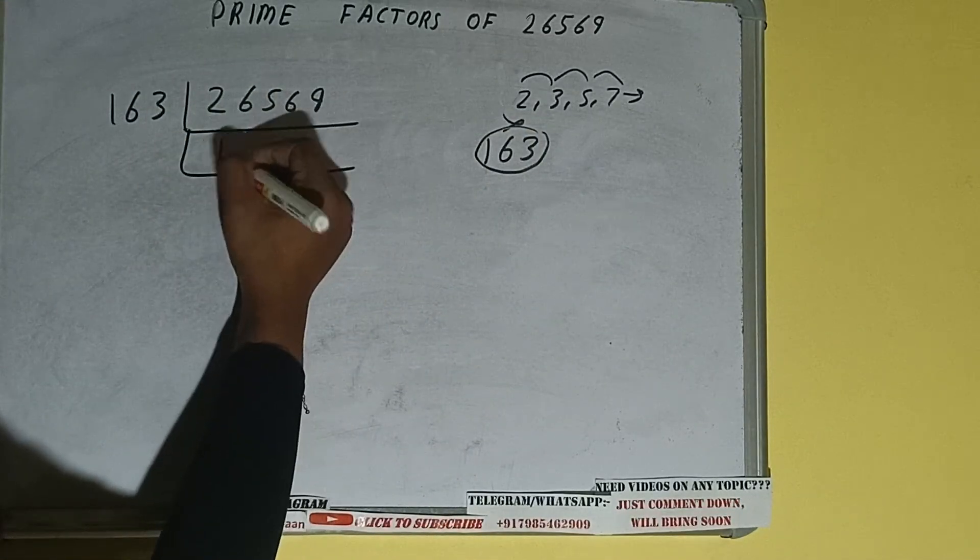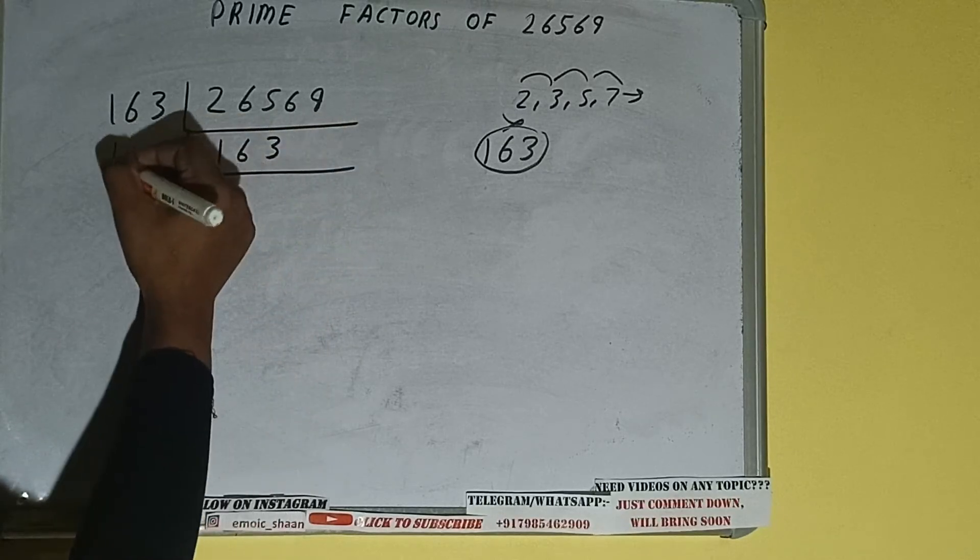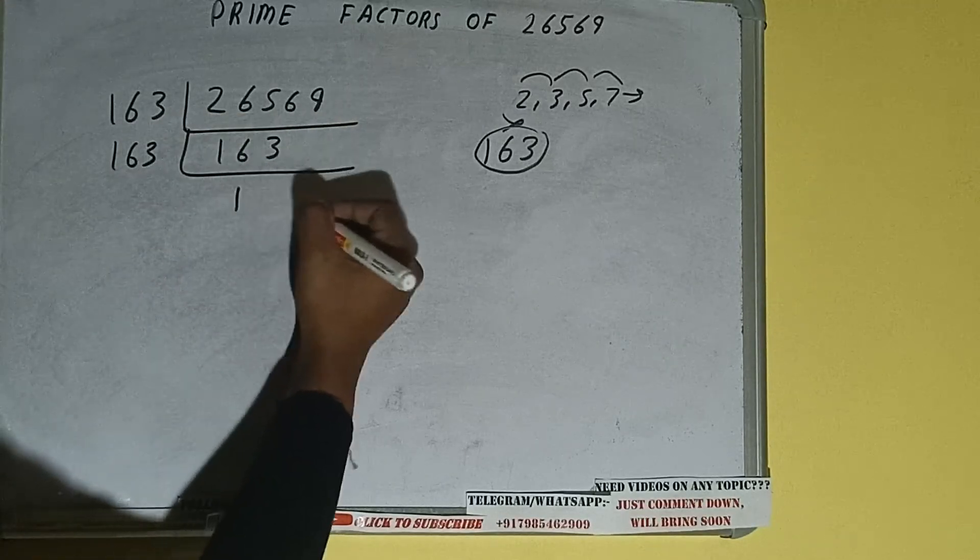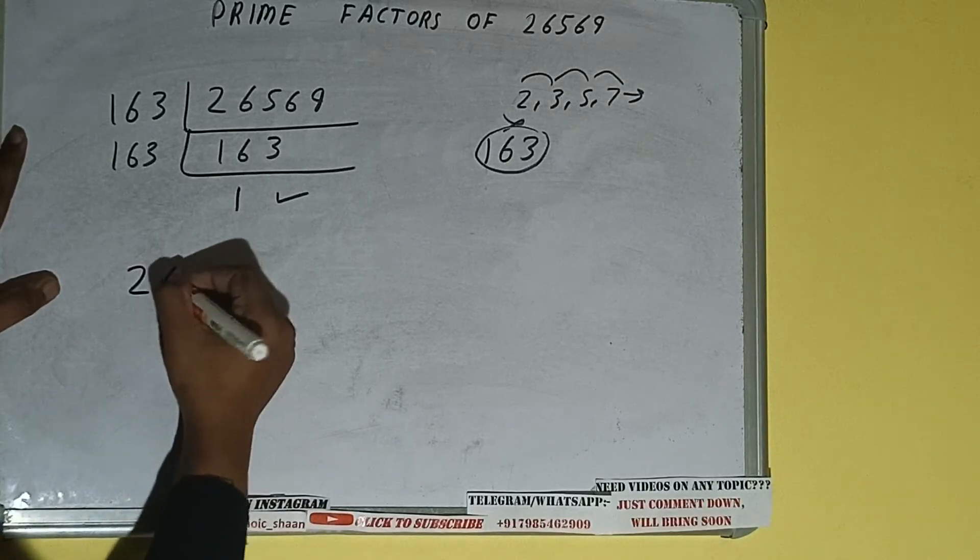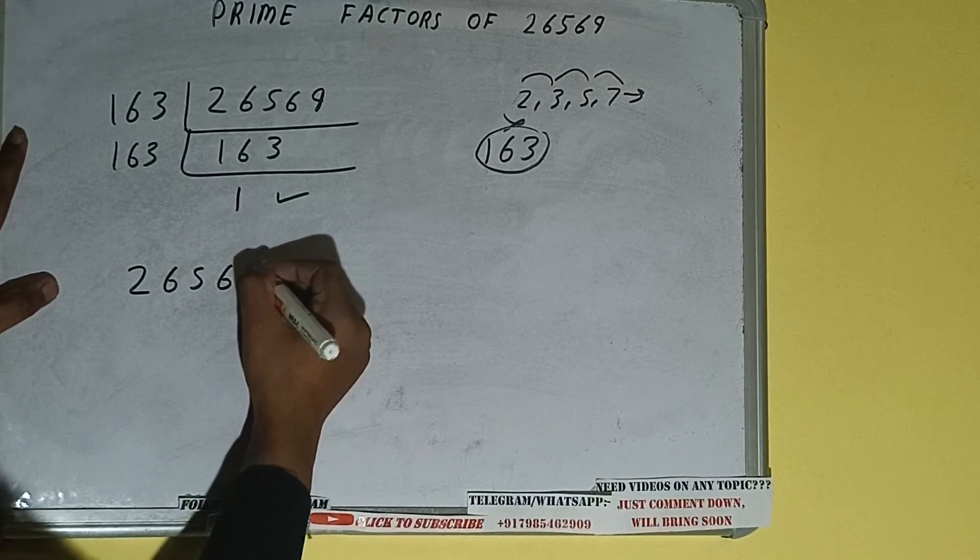...and 163 again. If we divide, once we get one, we need to stop and do one last thing. That is, prime factor of 26569 is equals to 163 into 163. That will be the answer.